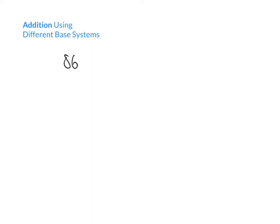So let's say we have the addition 86 plus 57. We're going to lay this out in the standard manner, with 86 plus 57 and our result below. When we're adding, we start with the least significant digits on the right-hand side. In the right-hand column we add 6 plus 7, and 6 plus 7 gives us 13.